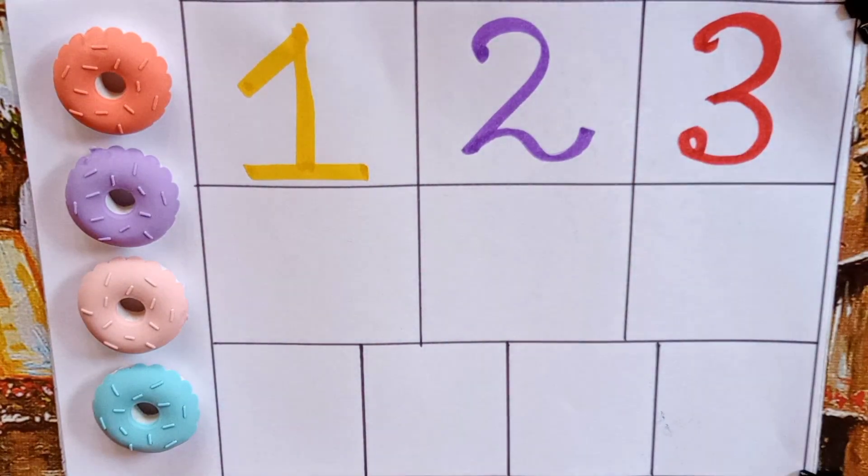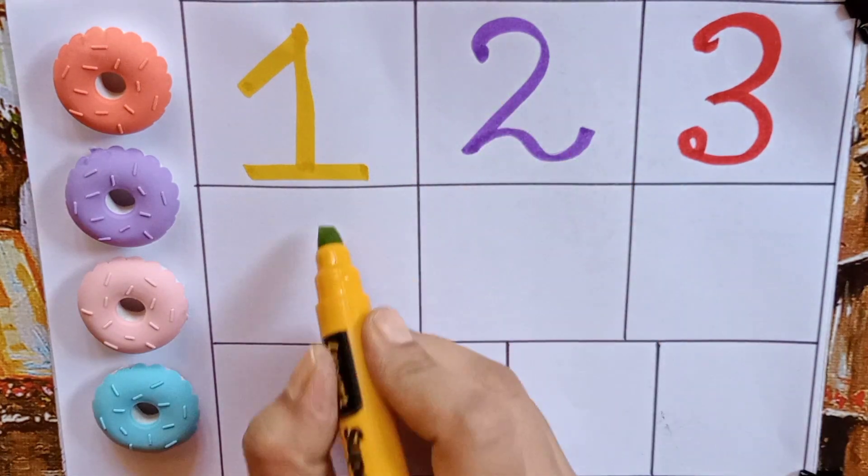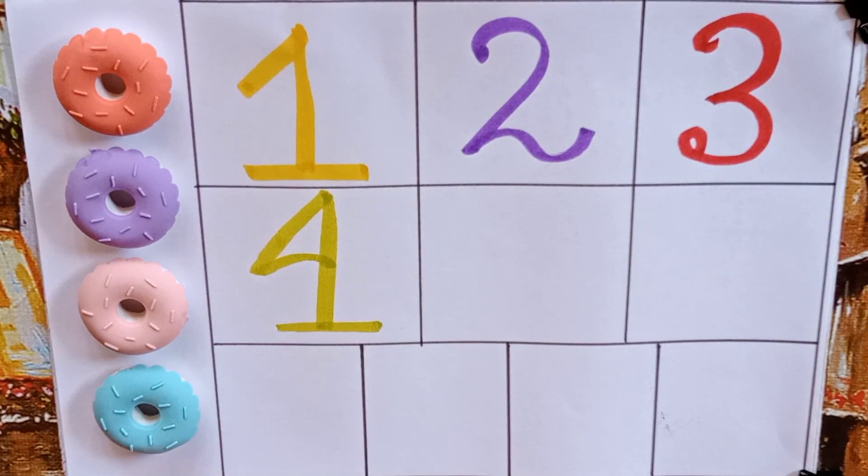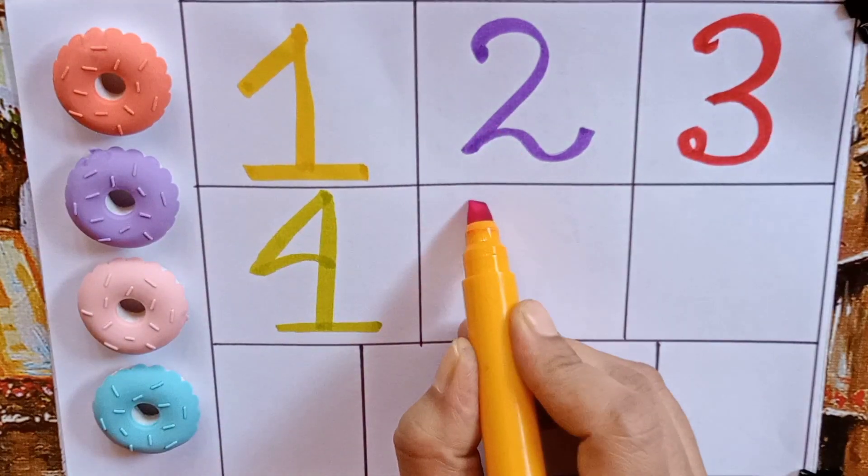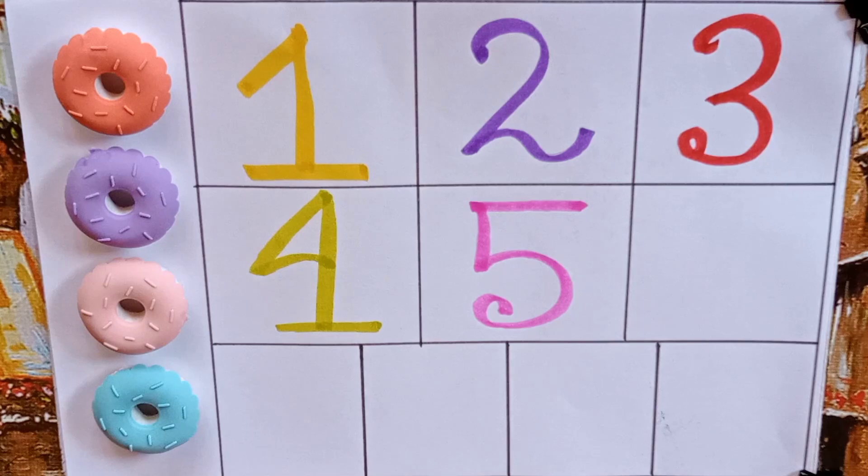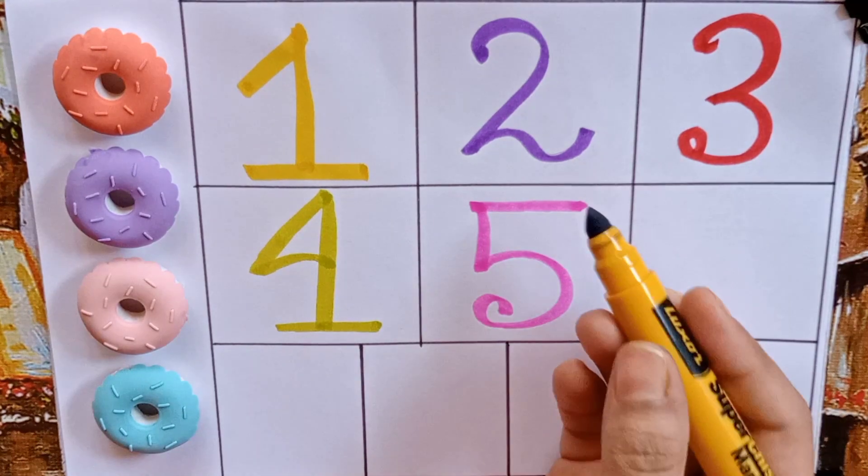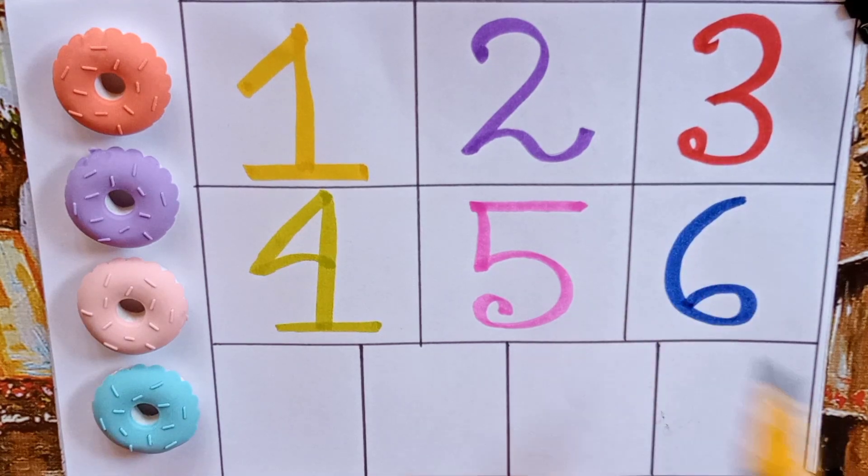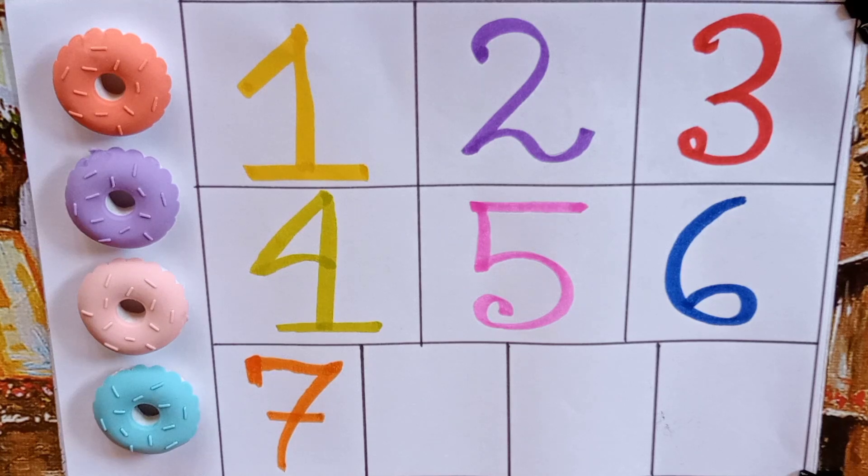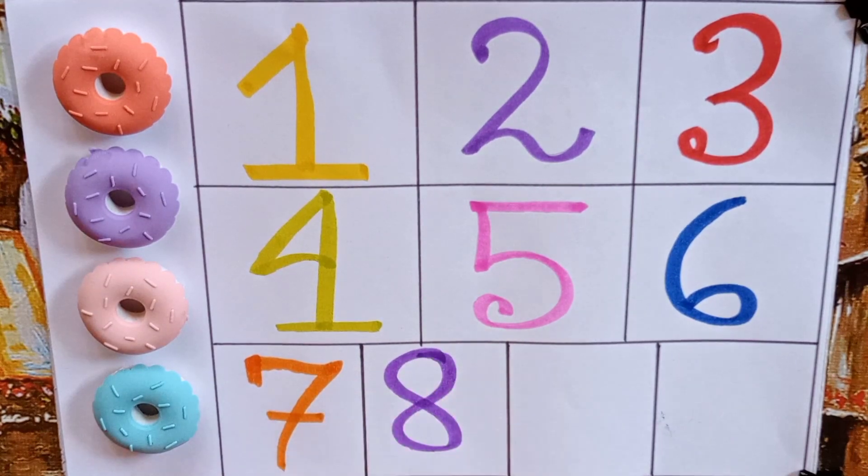Six, S-I-X, six. Our next color is orange. Seven, S-E-V-E-N, seven. Purple, eight, E-I-G-H-T, eight.